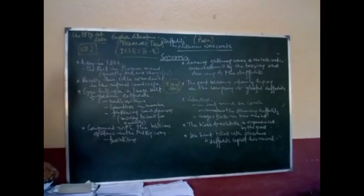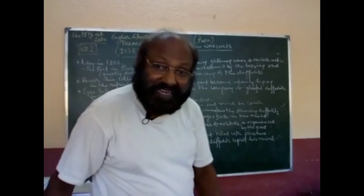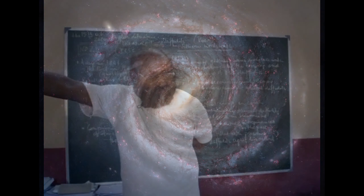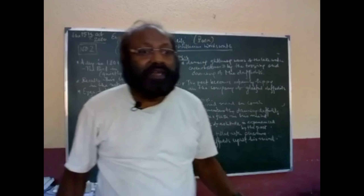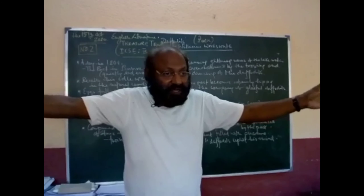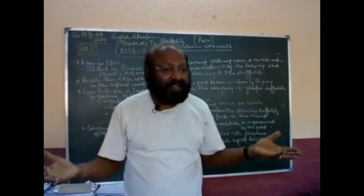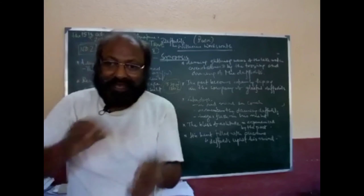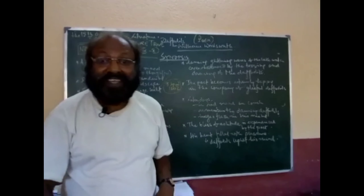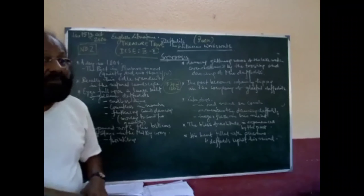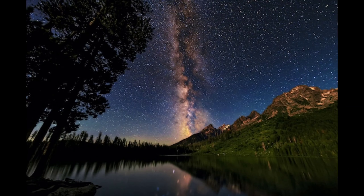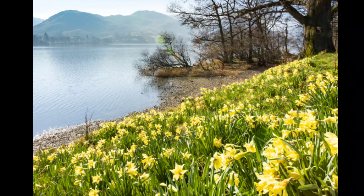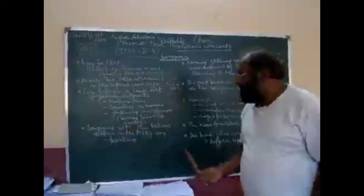The poet compared this with the Milky Way. You have heard the name of the Milky Way — it is a huge stretch of stars. In a clean sky, you can see the Milky Way: billions of stars twinkling in the distance. So just as the Milky Way is a collection of billions of twinkling stars, these are billions of daffodils fluttering, tossing their heads and dancing. So the poet compared this vast stretch of daffodils with the Milky Way.